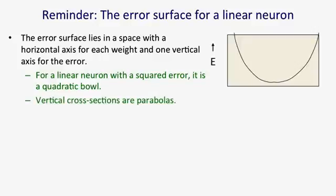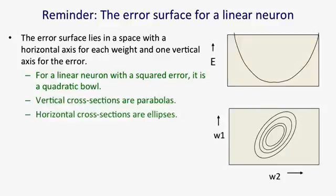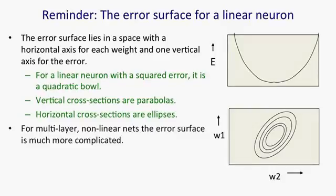The vertical cross-sections are parabolas, and the horizontal cross-sections are ellipses. For multi-layer non-linear nets, the error surface is much more complicated.